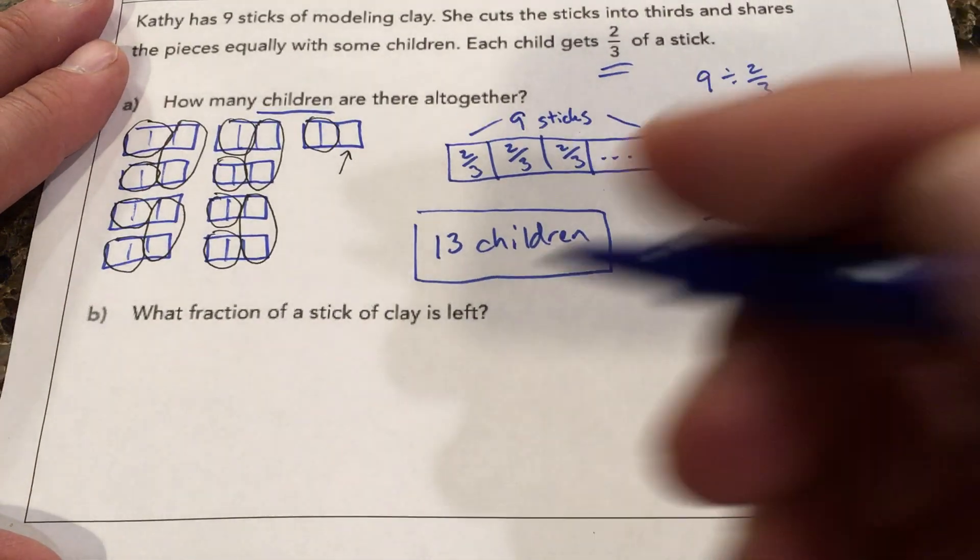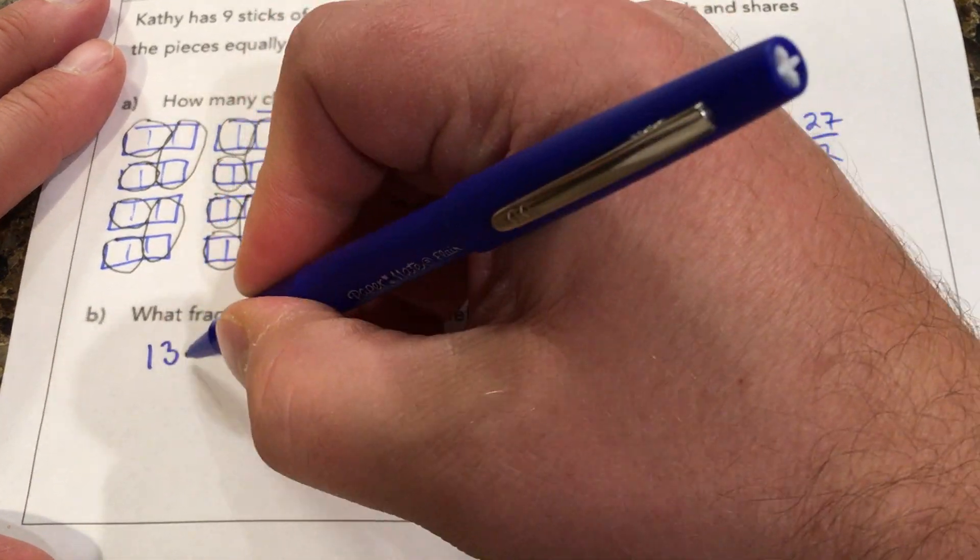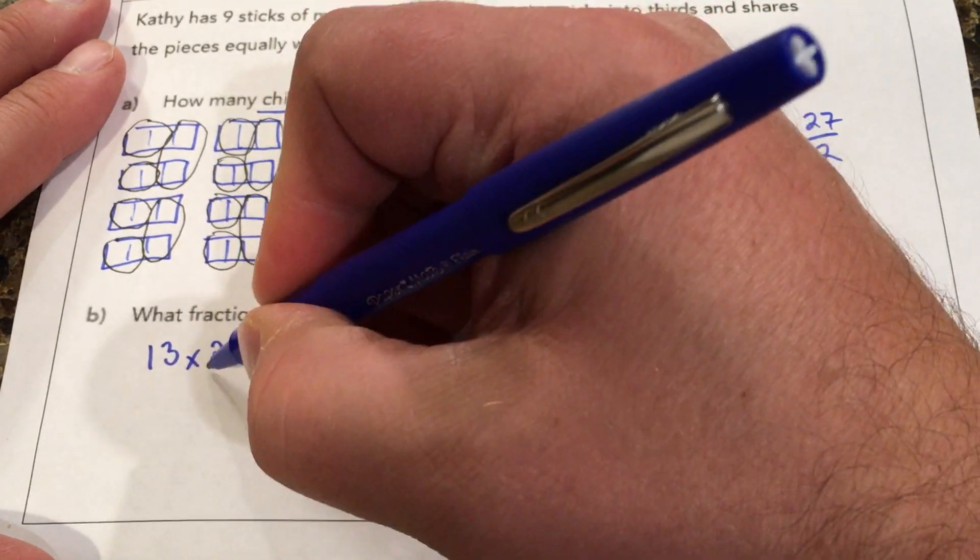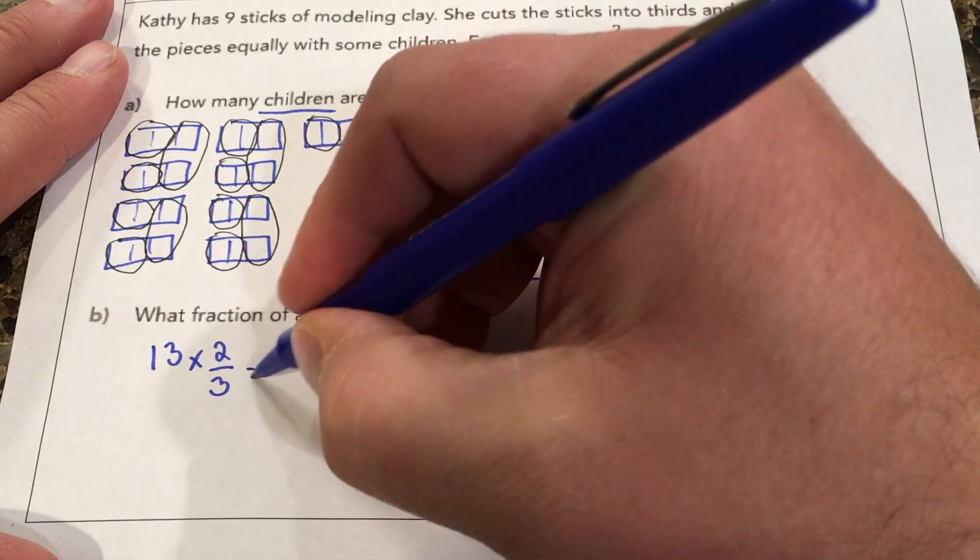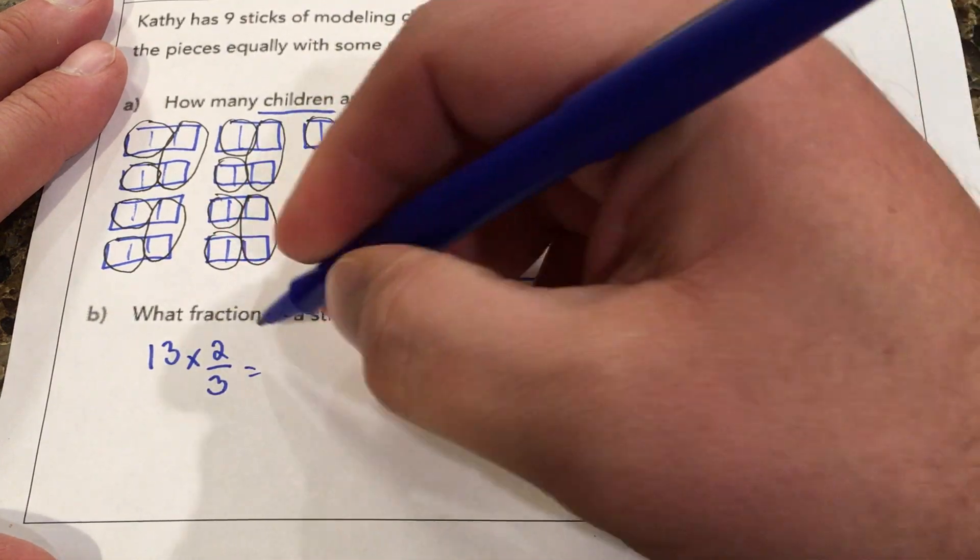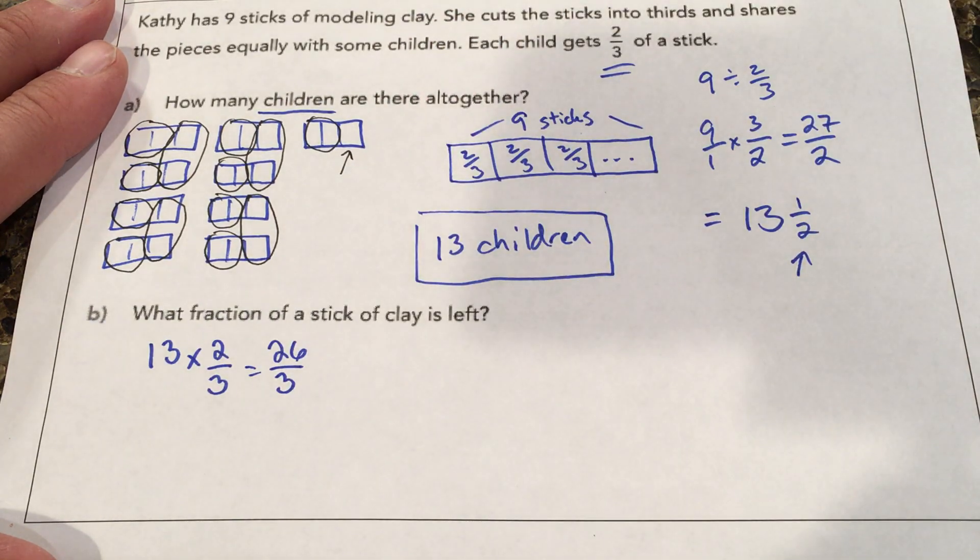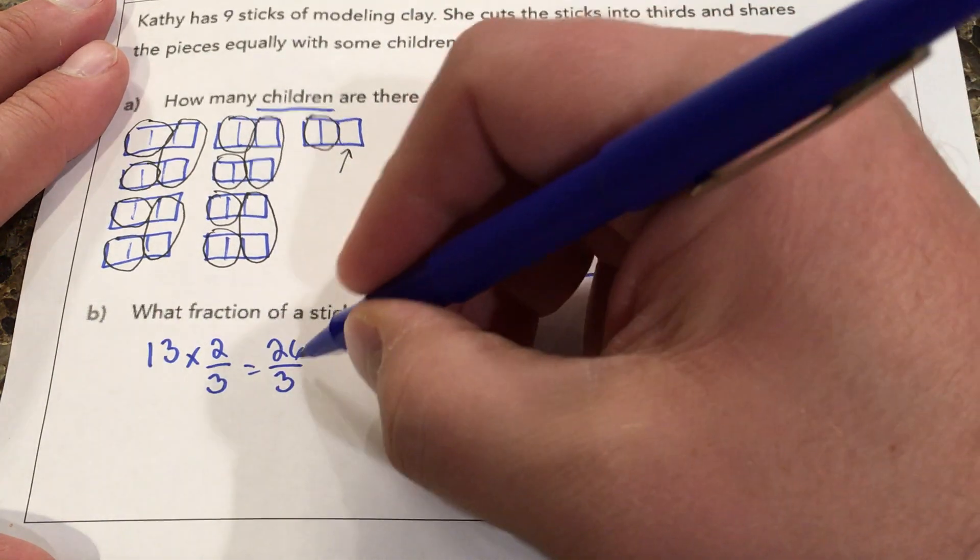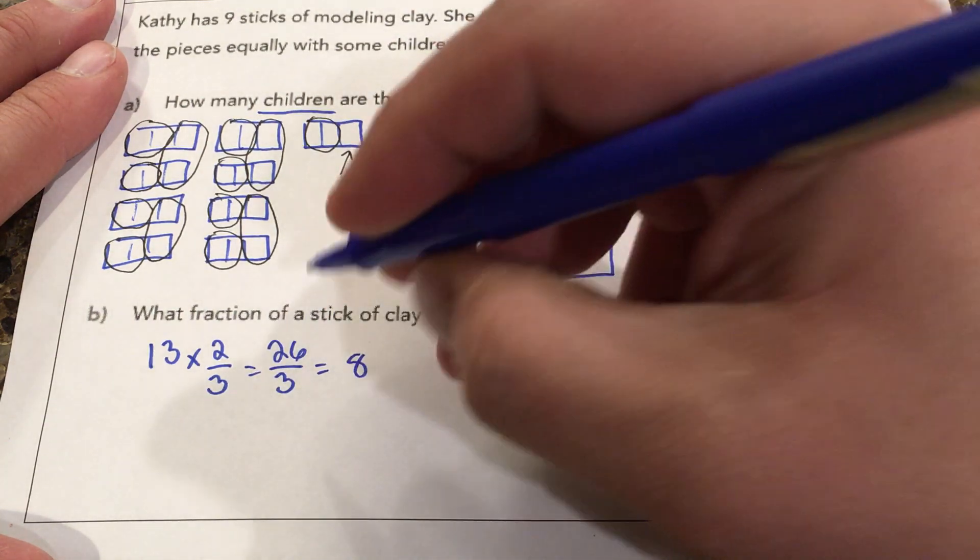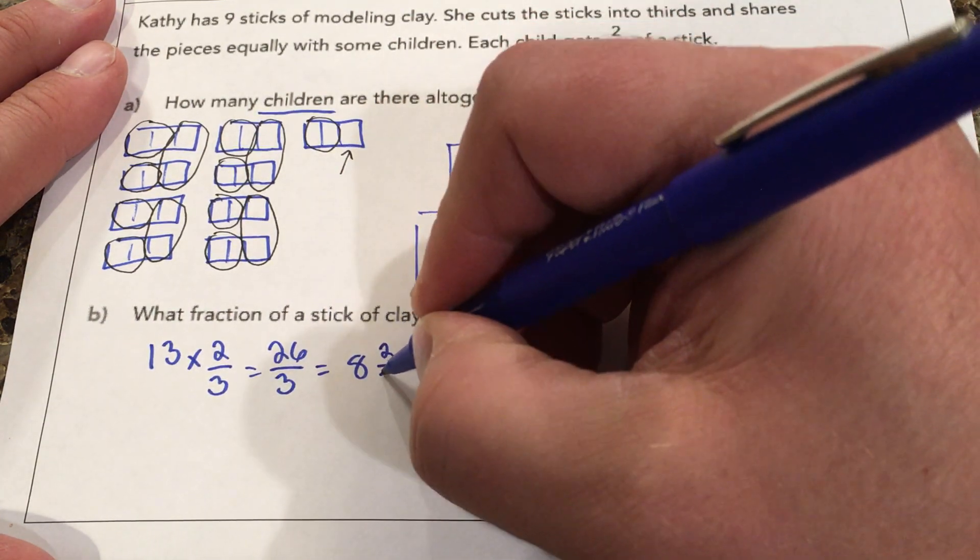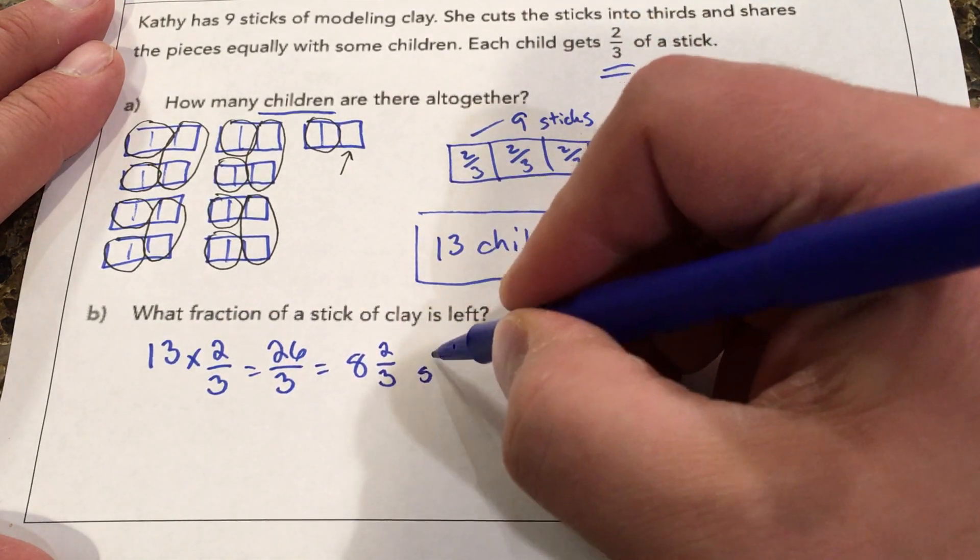But if we didn't have the model to help us we could say there are 13 children. Each received two-thirds of a stick which is 26 over 3. 3 goes into 26, 8 times because 8 times 3 is 24 with 2 left over so 8 and two-thirds. So Kathy gave out 8 and two-thirds sticks.